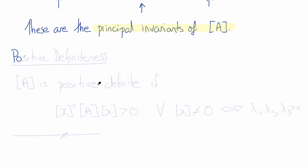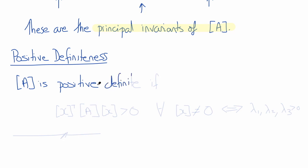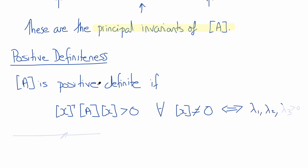Finally, let's review the concept of positive definiteness. The matrix A is positive definite if the product X transpose times A times X is greater than 0 for all values of X not equal to 0. This in turn implies that lambda 1, lambda 2, and lambda 3 are all greater than 0. In other words, if all three eigenvalues are positive, then matrix A is positive definite. And that's a good place to stop for today.